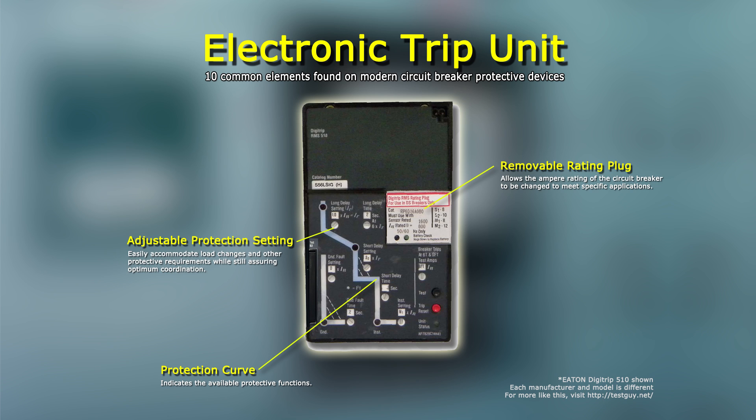Number 3: Adjustable Protection Setting. This dial allows the user to easily accommodate load changes and other coordination requirements. Prior to placing any circuit breaker in operation, each trip unit protection setting must be set to the values specified by the person responsible for the installation.